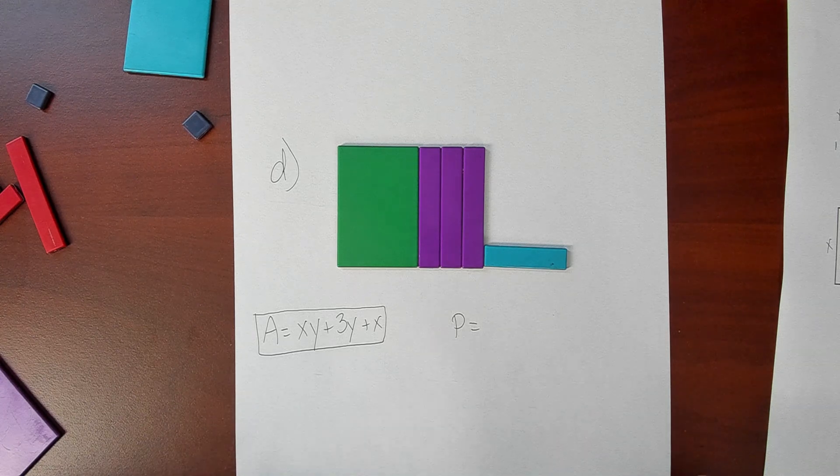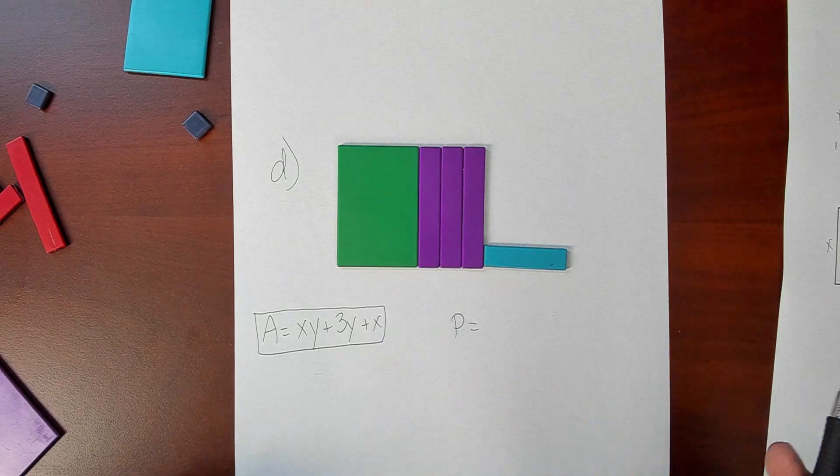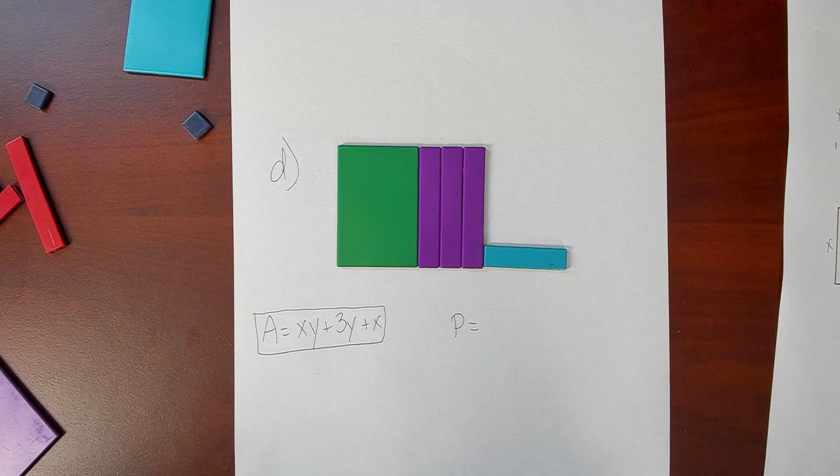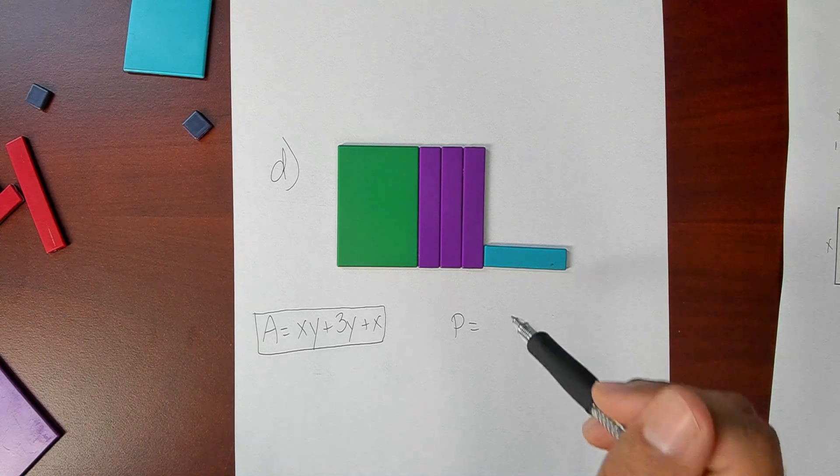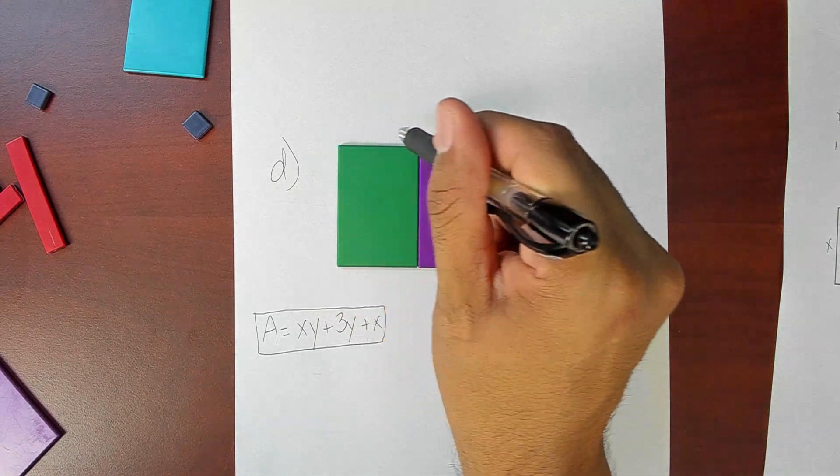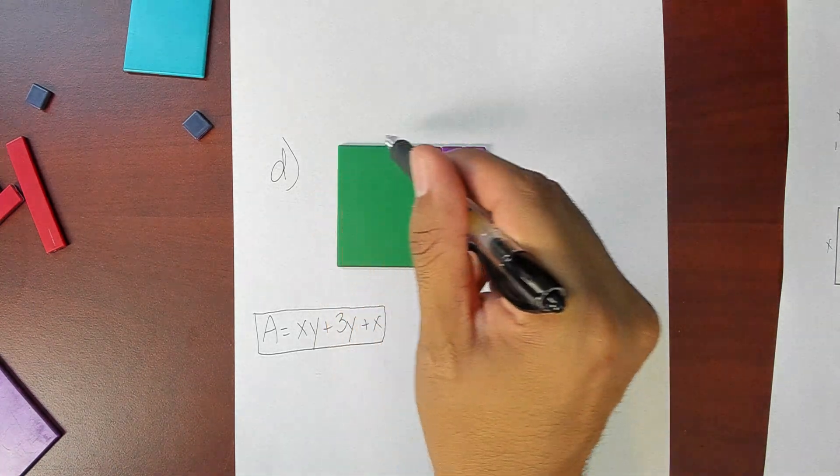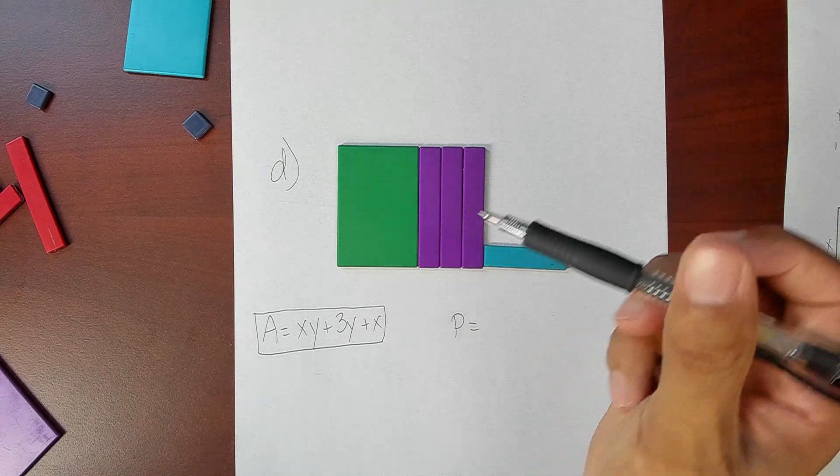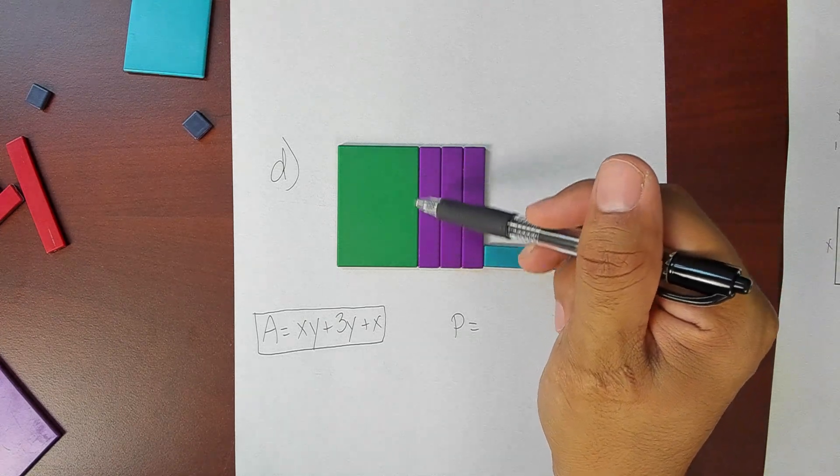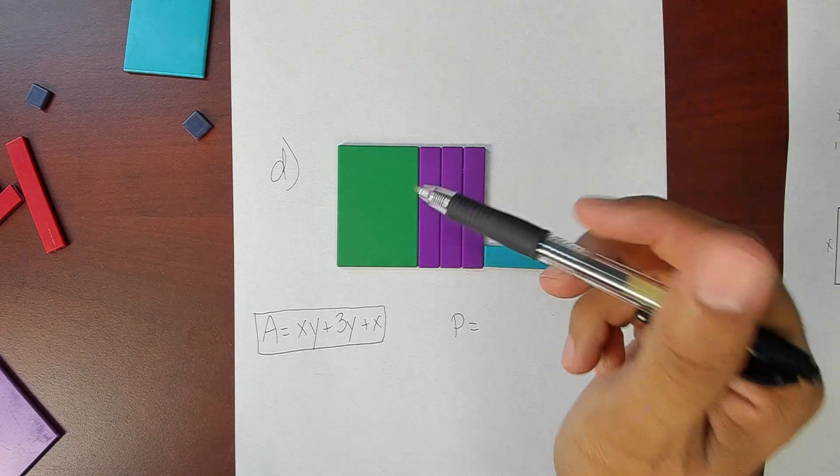Alright, let's go to perimeter now. Perimeter is the one that requires a little more work because we need to label all the sides going around this shape. Remember, perimeter is adding up the exterior sides. I do not care about these interior sides that are hiding in between those tiles.